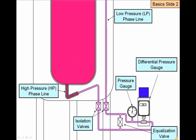The gauge assembly includes a pressure gauge that measures the pressure of the top of the tank and a differential pressure gauge that measures the liquid column in the tank. Isolation valves are located at the penetrations of the outer vessel and are used when servicing the gauge assembly.